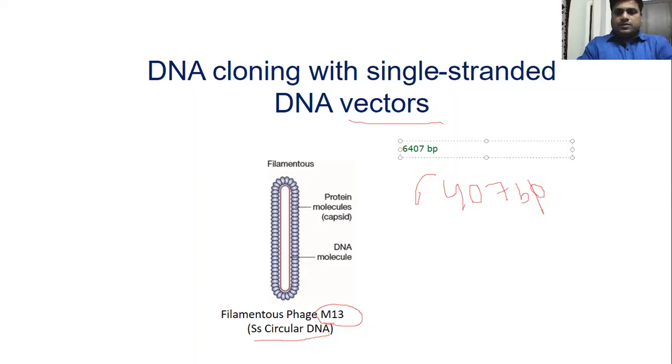This is also homologous with fd and f1 phage. There is approximately 97% homology - these fd and f1 phages have only 3% change.